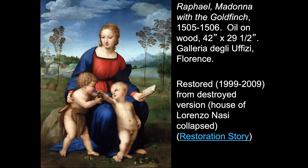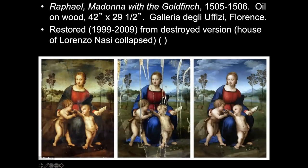Raphael became known specifically for making Madonnas — Mary, sometimes with the child Jesus. In this case we have Mary, child Jesus, and John the Baptist, identified by his animal cloak even as a baby. This particular painting was restored over a period of 10 years from a very damaged canvas found in the house of Lorenzo Nasi — a difficult process involving fixing and repainting empty spaces.